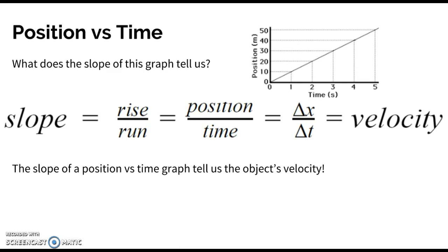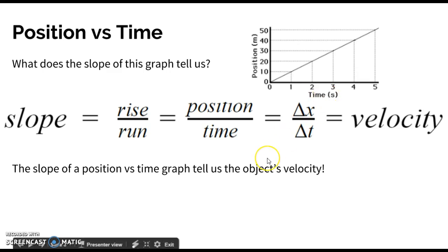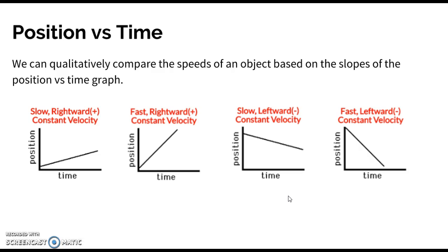We can do a quick unit analysis to confirm: rise over run gives meters divided by seconds, which is meters per second — velocity. So the slope of a position versus time graph tells us an object's velocity. We can also qualitatively compare the speeds of objects based on these graphs. Qualitative means without numbers — we're just analyzing the shapes of our graphs to see what that tells us.